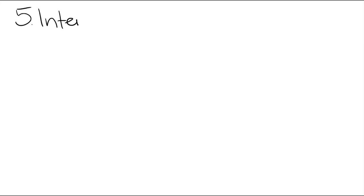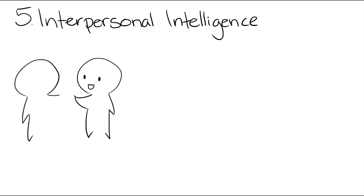Number five, interpersonal intelligence. People with a high interpersonal intelligence are often good at communicating with others. They are good at noticing shifts in others' moods and motives, as well as taking multiple perspectives on a subject.